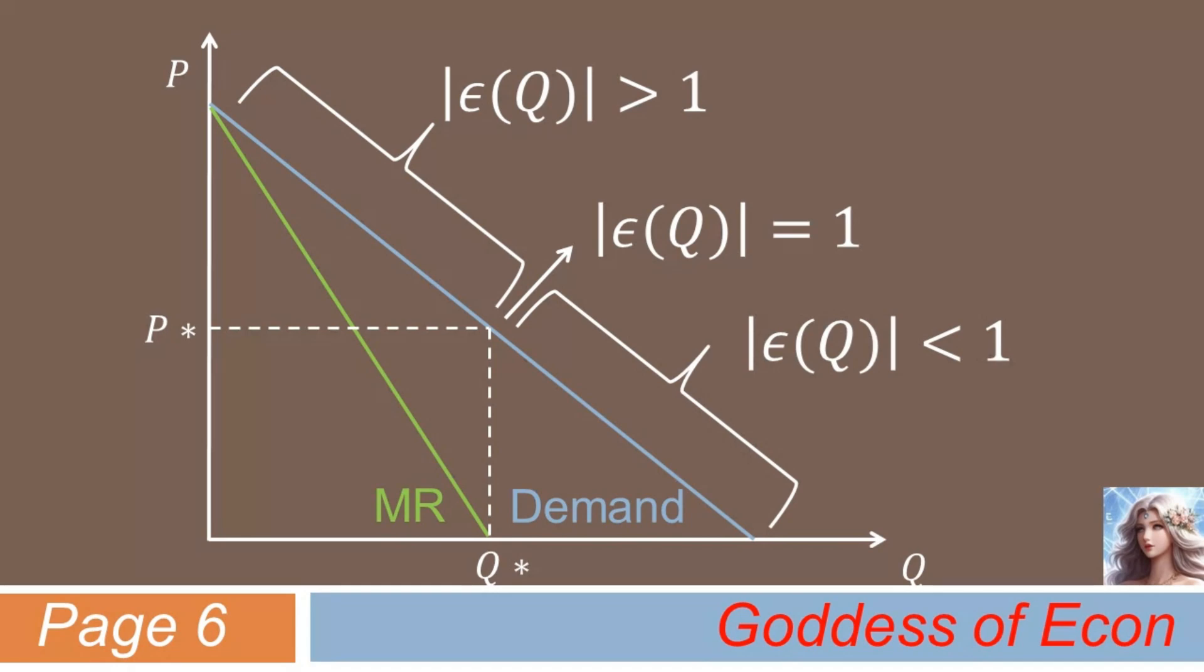Similarly, if the firm's production level is currently at this latter segment, that is, if the quantity produced is more than Q star, then the firm would try to produce less to increase its revenue. Again, until it reaches the point where the absolute value of the price elasticity becomes 1.